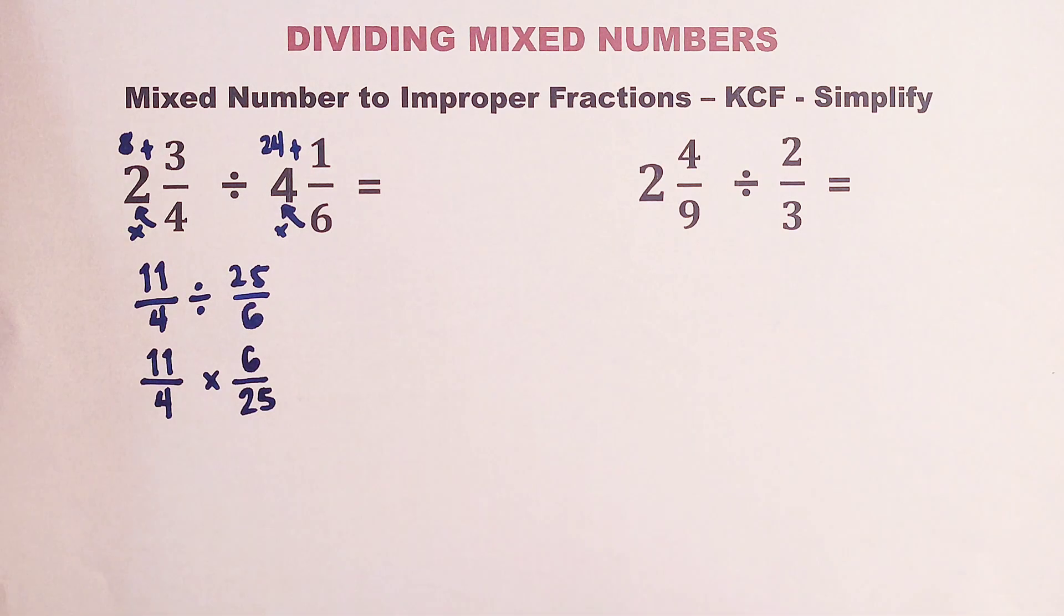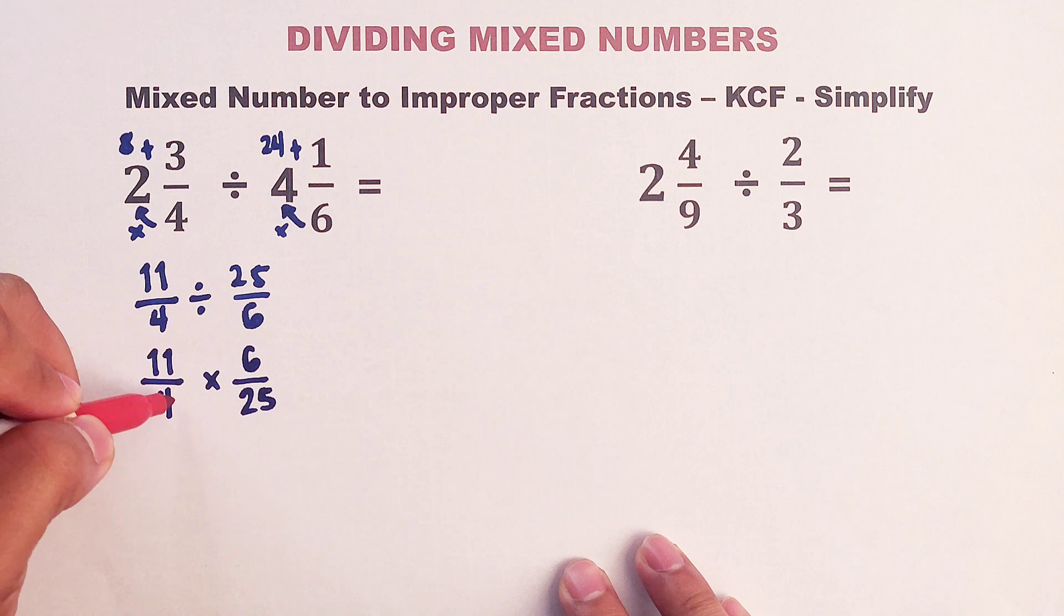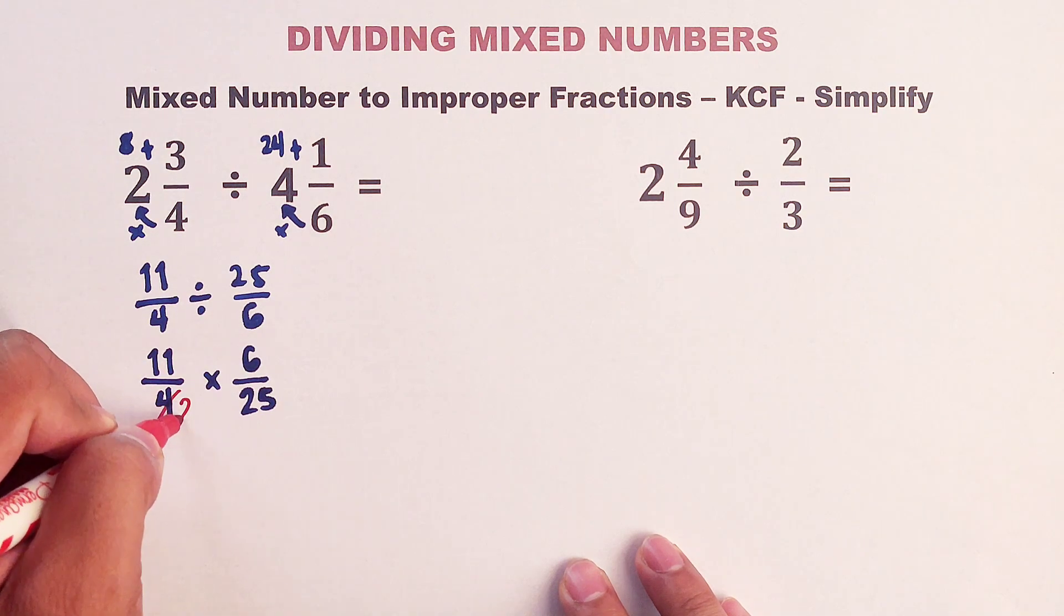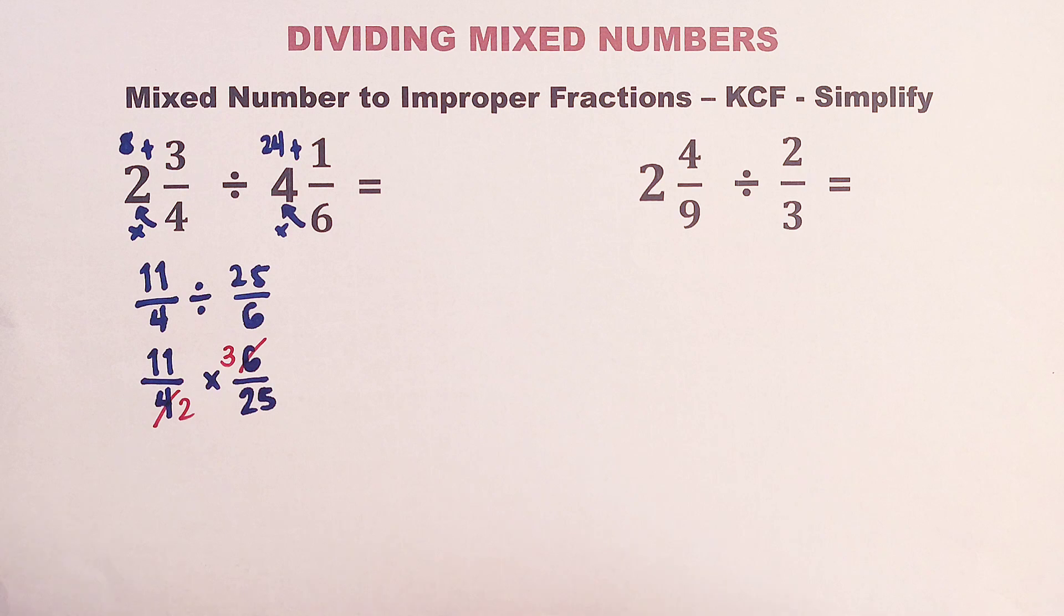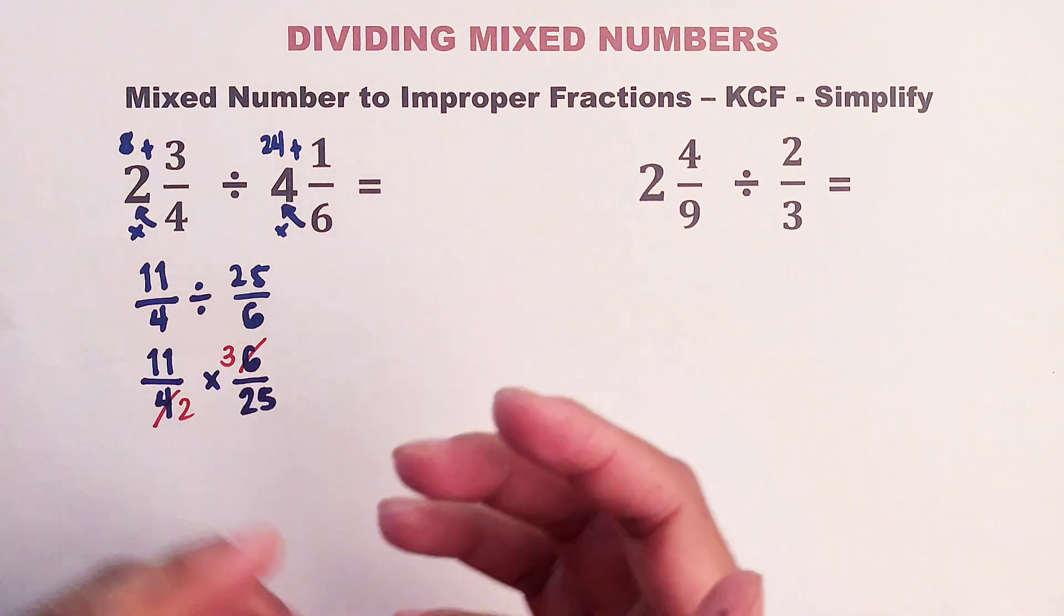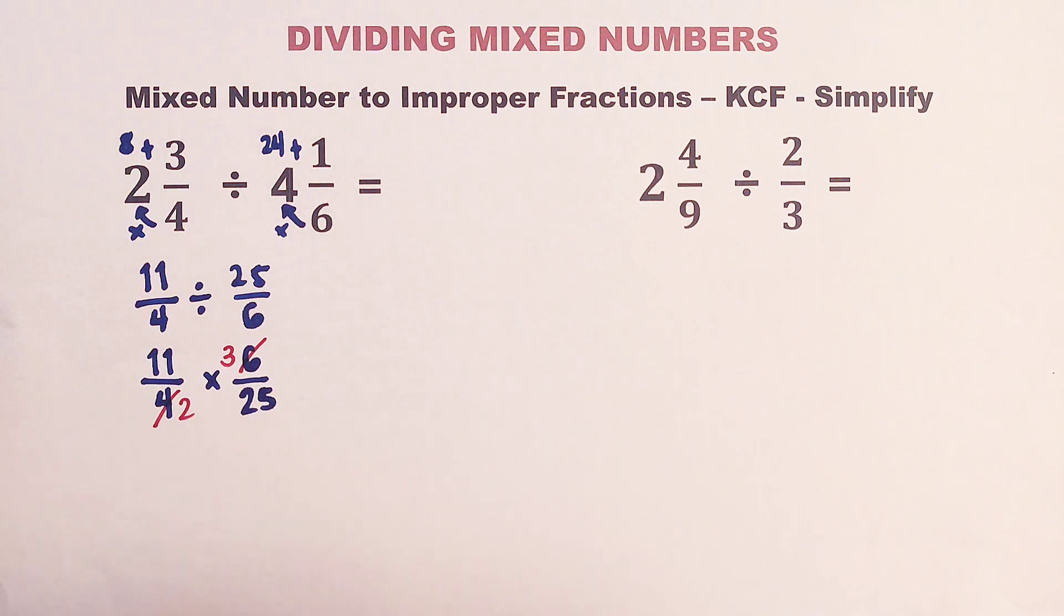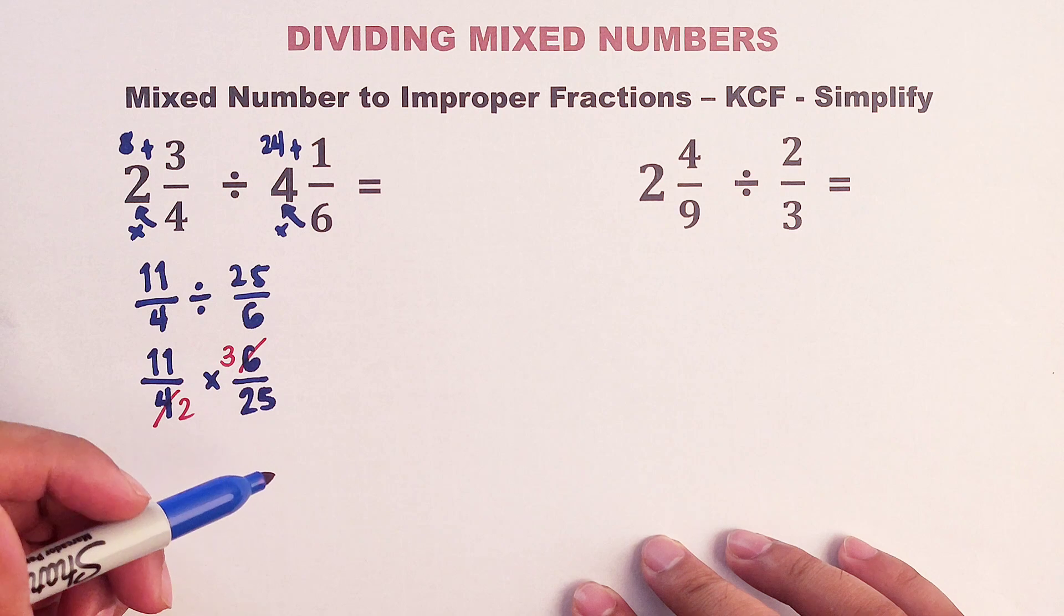And as you can see, we can use direct multiplication, but there's something that we can cancel. This 4 can become 2. This 6 can become 3. And as you can see, the numbers is much smaller compared before.